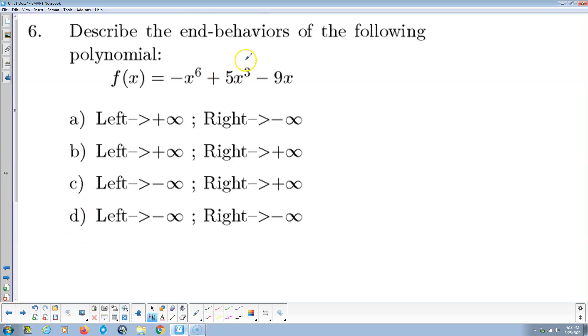Describe the end behaviors of the following polynomial function. Well, even-degree polynomial functions are both positive infinity on both sides, but when you multiply them by a negative leading coefficient, they'll both be negative infinity. So answer D.